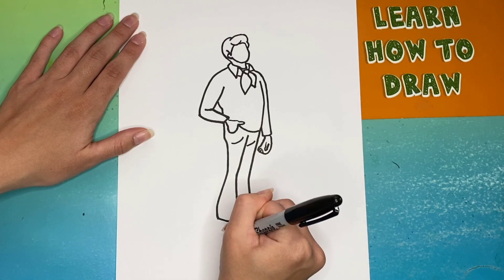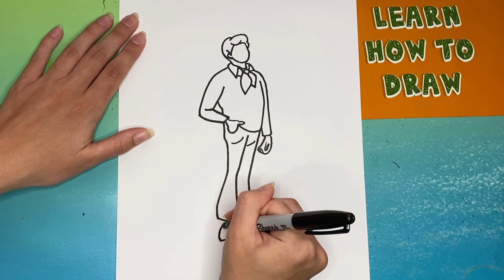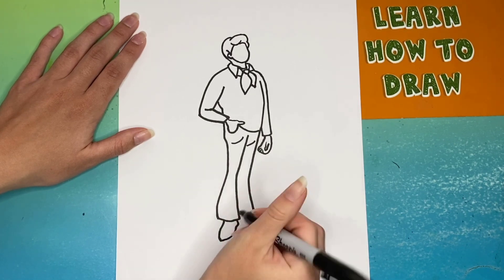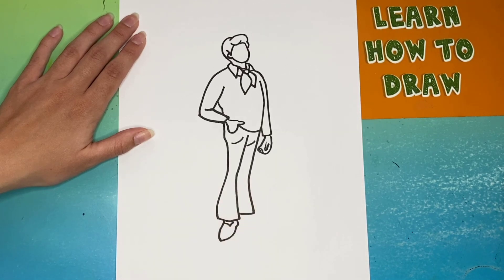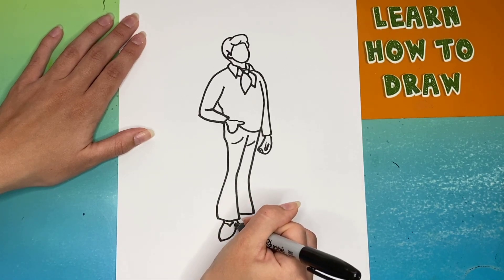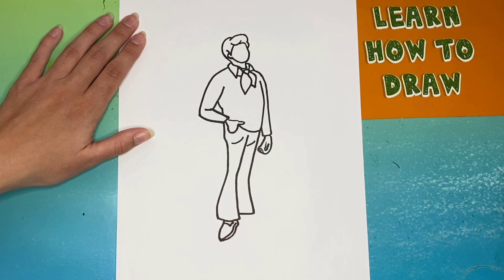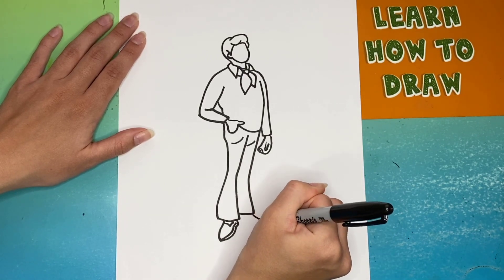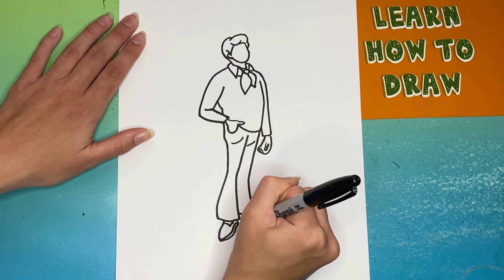And to finish off the body, we will draw his shoes. For the shoe, we're going to make a curved shape. Then we're going to have a little rectangle in it and we're going to draw a small line on the bottom for the sole. Now we're going to make the right shoe. We will do the same thing that we just did for the left shoe.